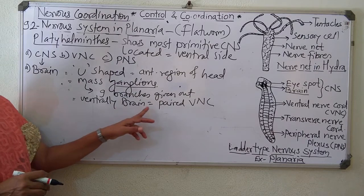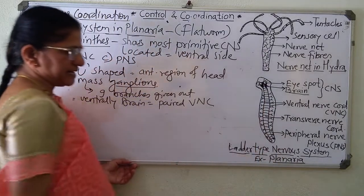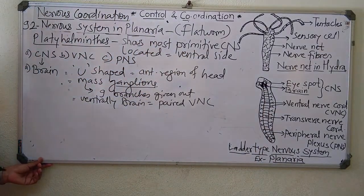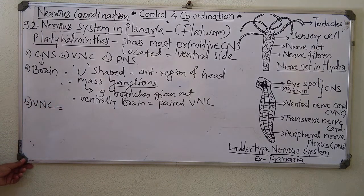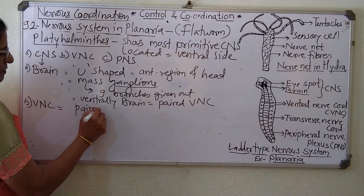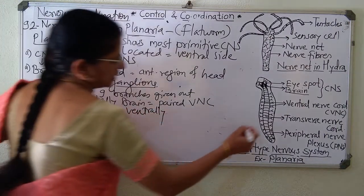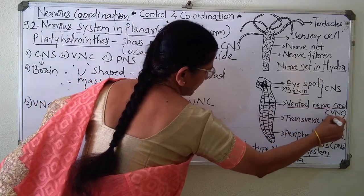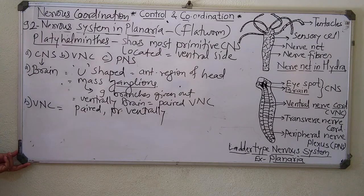The brain ventrally gives out a paired ventral nerve cord. Two ladder-like ventral nerve cords are seen on the ventral side of Planaria. The ventral nerve cord is paired and present ventrally on the ventral surface of the body, originating from the brain.